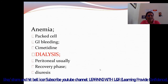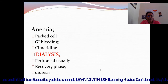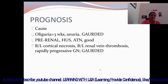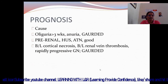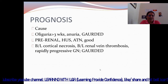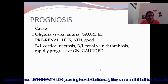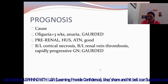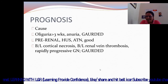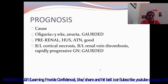If anemia: packed cells. For GI bleeding: cimetidine. Dialysis — peritoneal — usually in recovery phase and during diuresis. If the cause is recovered but oliguria persists for more than 3 weeks or anuria, then pre-renal HUS-ATN has a good prognosis. HUS — hemolytic uremic syndrome — affects the blood and blood vessels; ATN is acute tubular necrosis.